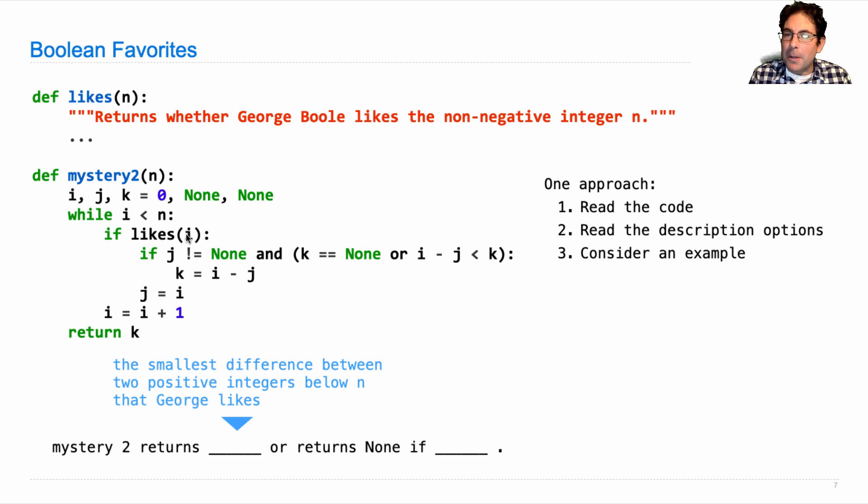If George likes one number, then we won't assign k yet, but we will assign j. But still k will never get assigned, and we'll return none. But if it's ever the case that there are two different numbers below n that George likes, we're going to end up assigning k to something, the difference between those two.